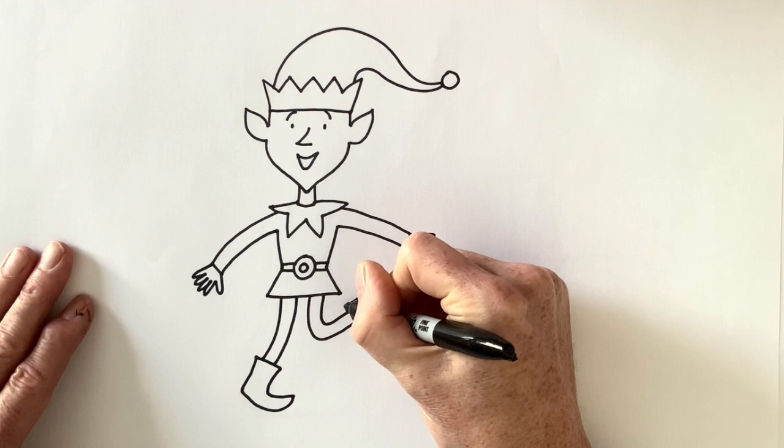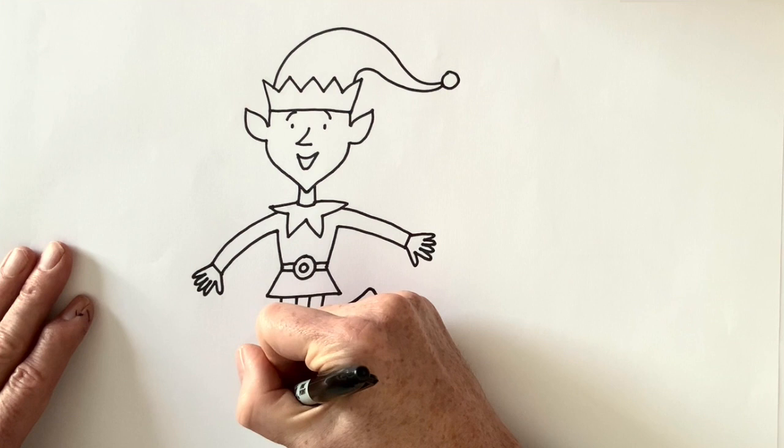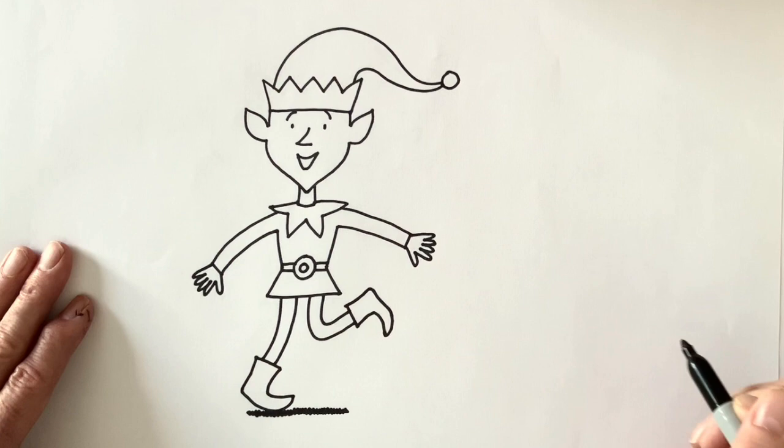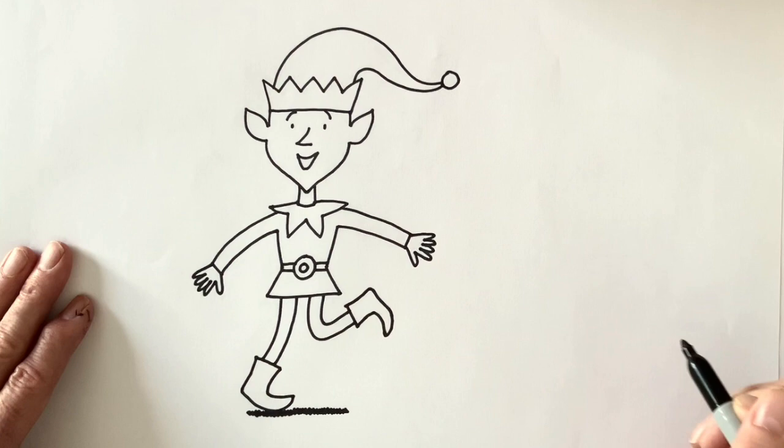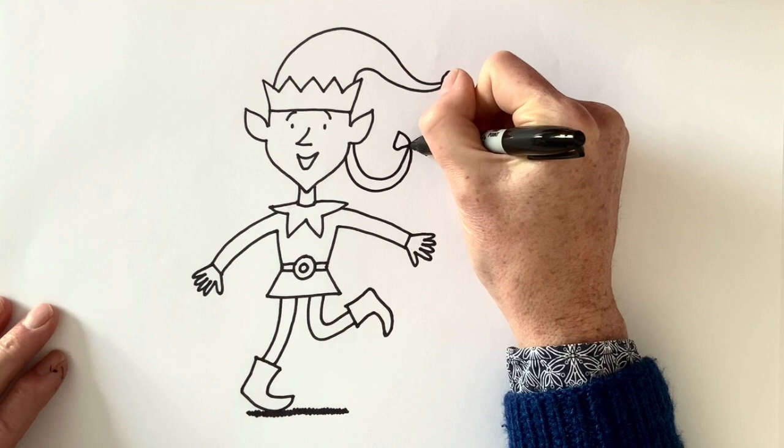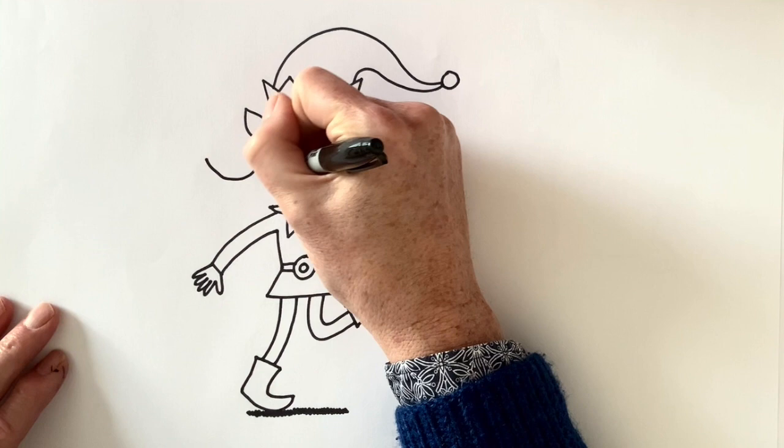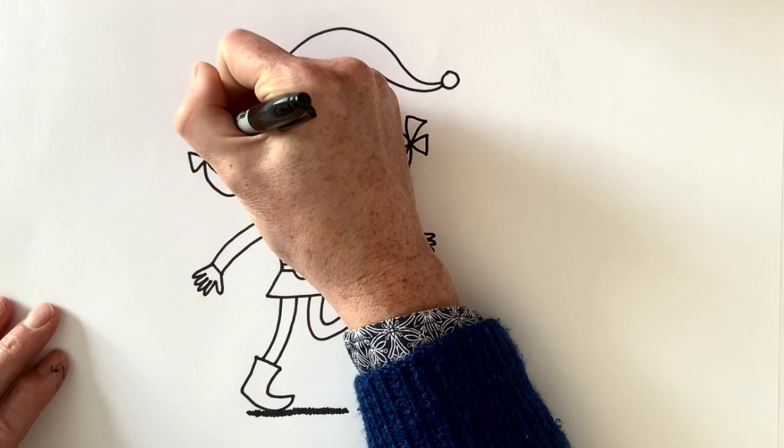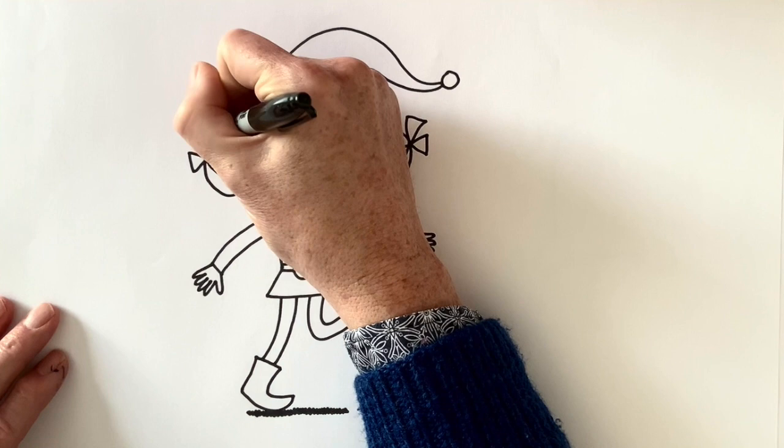Like I say, you can draw your elf in all sorts of positions. What shall I do? I'm going to add a little bit of shadow here. And there is Christmas elf. Now, if you want to make a girl elf, you could add a bit more hair, couldn't you? How about two plaits like this with ribbons? And just a little bit of hair either side there. There you are, a girl elf. You choose whether you want to draw a girl or a boy elf. Or maybe you could draw one of each.